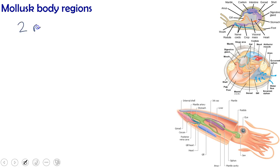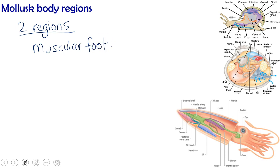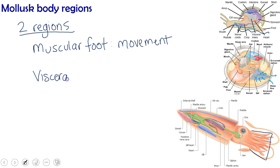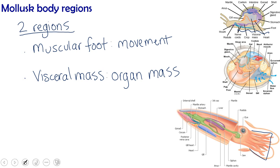Despite their diversity, mollusks are made of two basic body regions. One of those is the muscular foot, which is what the mollusk uses to move. In a snail it is on the bottom of its body; the foot in a squid is actually divided into arms, so it can look very different. The other region is the visceral mass, where all of the organs are — in humans, our torso is basically where our visceral mass is. These two components, the foot and the visceral mass, combine in different arrangements to create the three general mollusk body types.